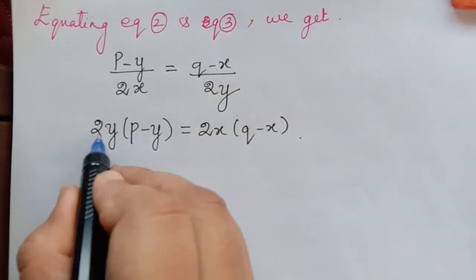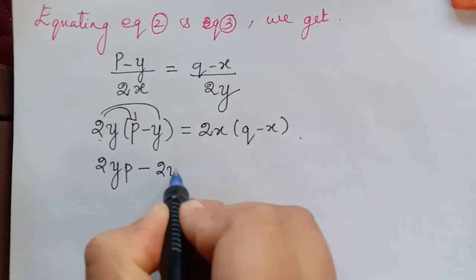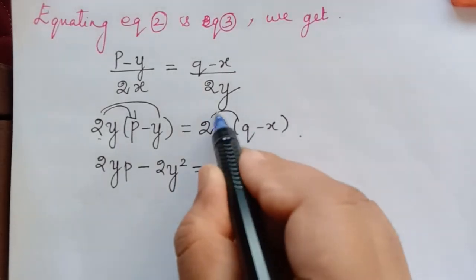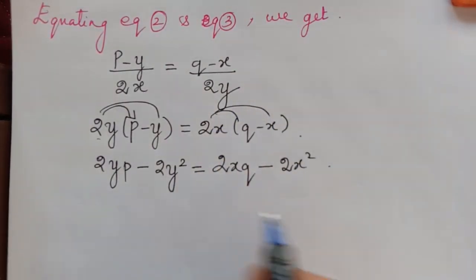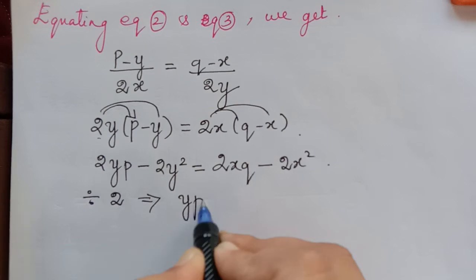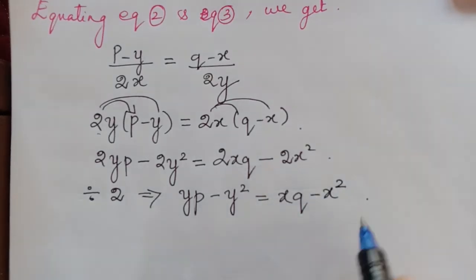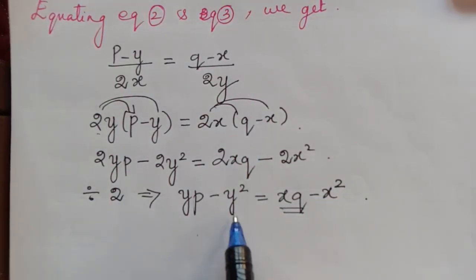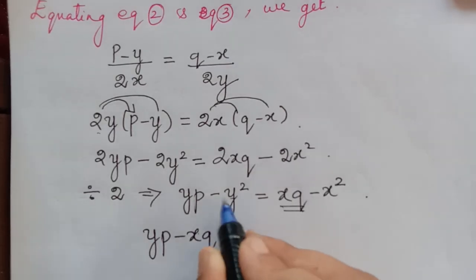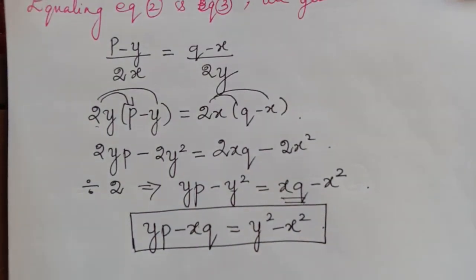On simplification, multiplying within the brackets: 2yp minus 2y squared equals 2xq minus 2x squared. Dividing throughout by 2: yp minus y squared equals xq minus x squared. Bringing xq to the left and y squared to the right: yp minus xq equals y squared minus x squared. This is the required partial differential equation.